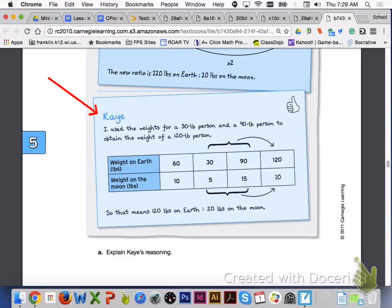If we look at Kay's example down on the bottom, another way to determine equivalent ratios in a table is to add corresponding ratios to get an equivalent ratio. She added 30 and 90 to get 120 and she added 5 and 15 to get 20.